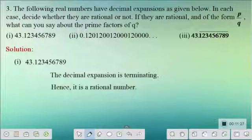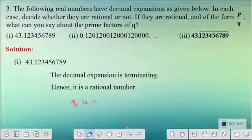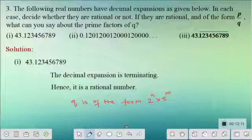The first subdivision is 43.123456789. By looking at it you can see the decimal expansion is terminating. Since it terminates, it is a rational number, which can be written in the form P by Q where the denominator Q is of the form 2 power n into 5 power m.